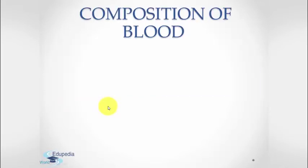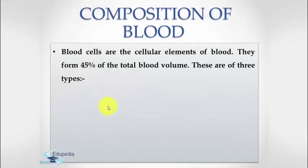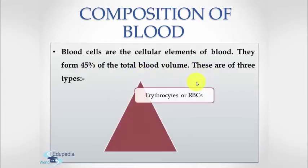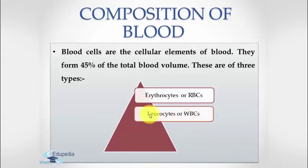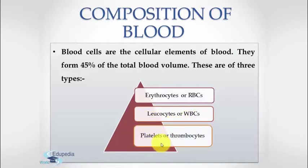We will discuss about the composition of blood. These blood cells are the cellular elements of blood. They form 45% of the total blood volume and are of three types. First are the red blood cells, better known as erythrocytes or RBCs. Then we have white blood cells, also known as leukocytes or WBCs. The last one are platelets, also known as thrombocytes.